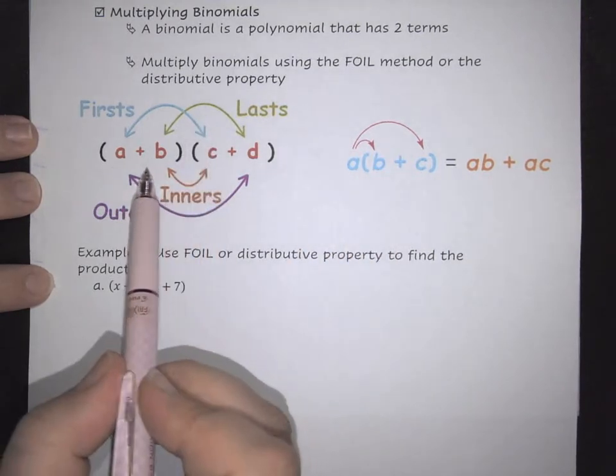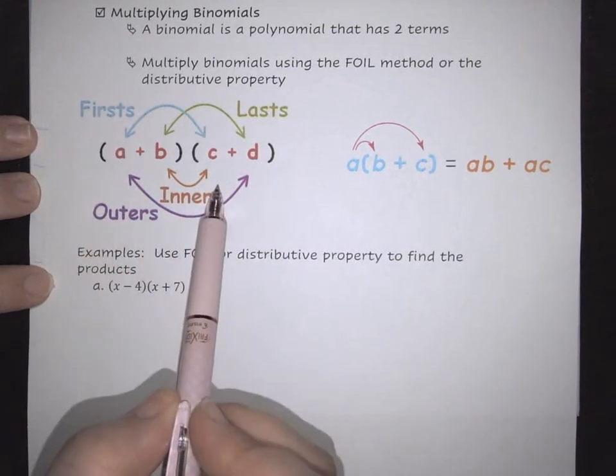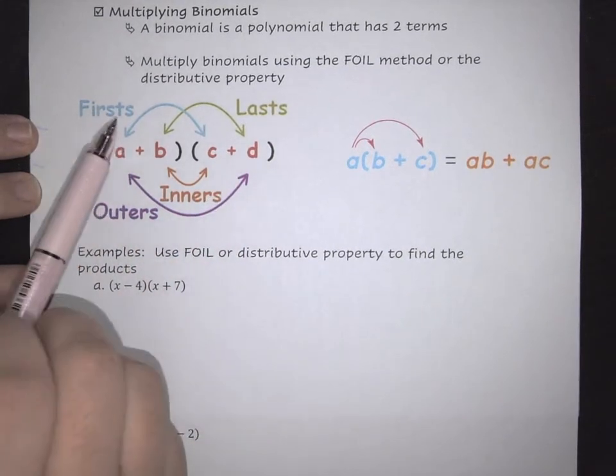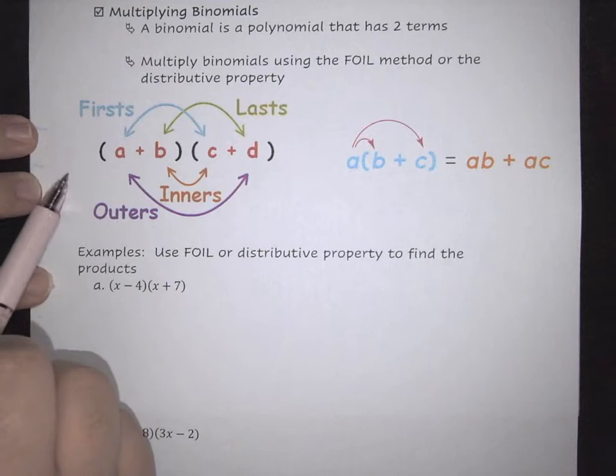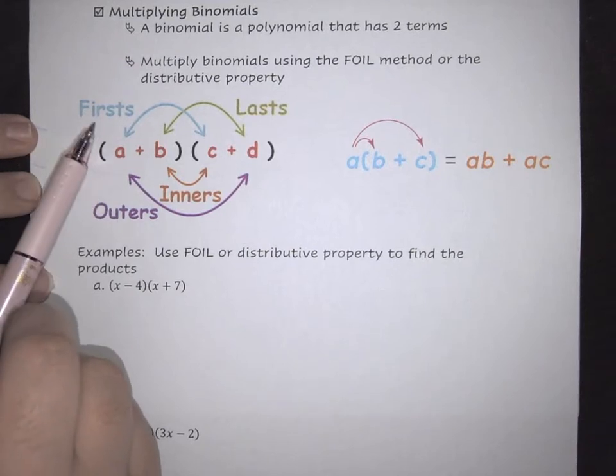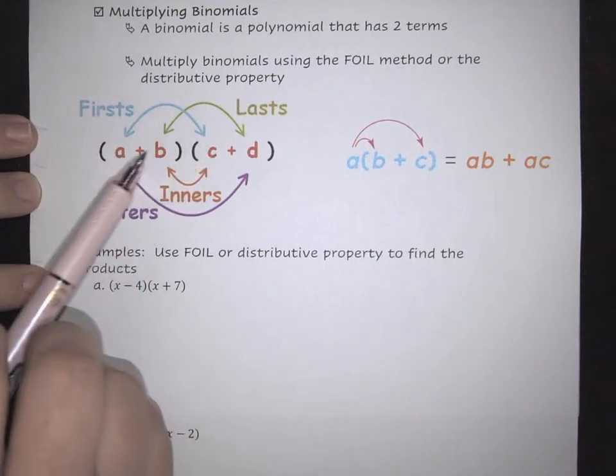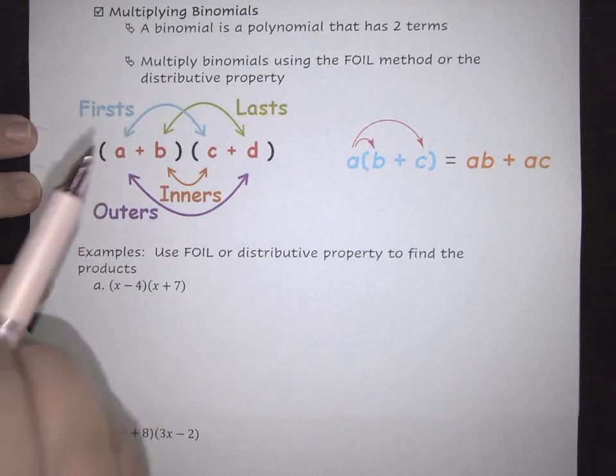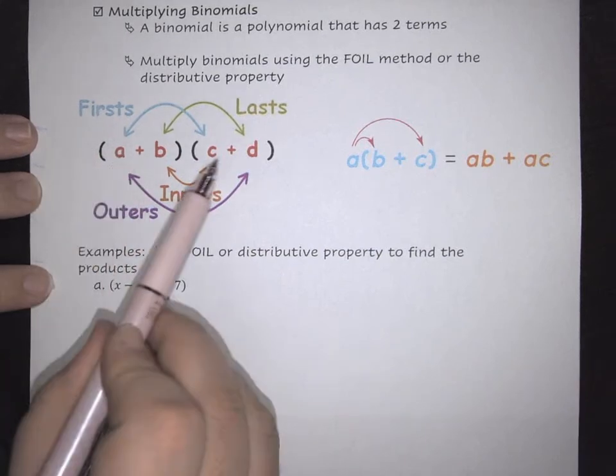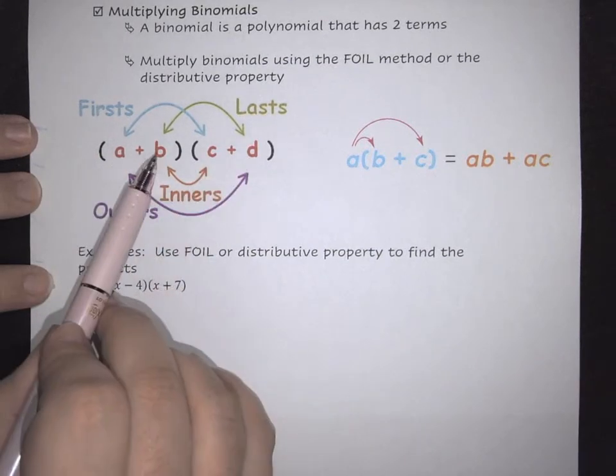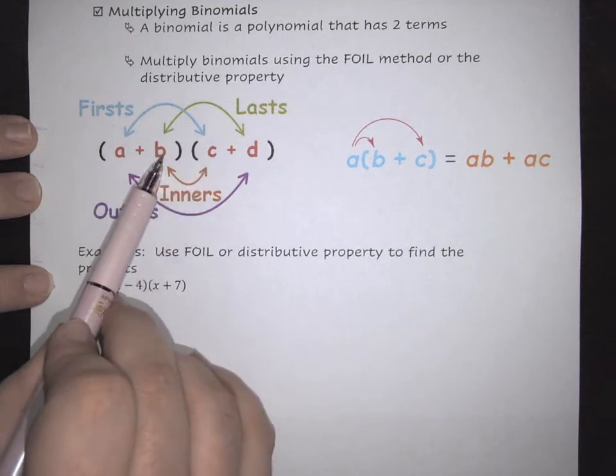First and foremost, if we look at this first example, this is called the FOIL method. FOIL tells you the order in which you multiply. F stands for first, so it would be the first terms that you multiply together. O is outer, so it's the outermost terms. Then you have your innermost terms and your last terms.